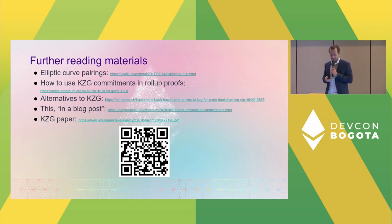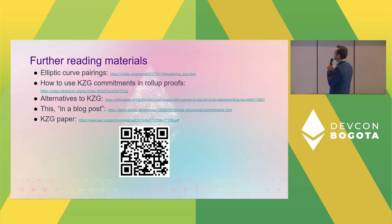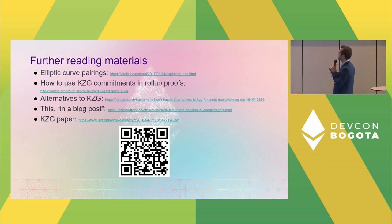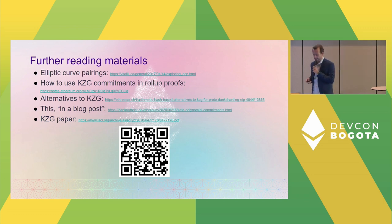Resources for further reading: Vitalik's post on elliptic curve pairings, notes on using KZG commitments in ZK rollups, Vitalik's summary on difficulties with alternatives to KZG, a blog post on KZG commitments, and the original KZG paper. Scan the QR code for all these links.